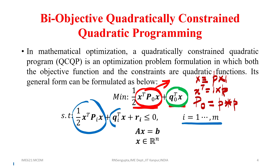The second part of each constraint, highlighted in violet, is the linear component corresponding to x — standard matrix-vector multiplication applies. The last term on the left-hand side of the less-than-or-equal sign is R_i, which would be R1, R2, R3 for M equal to 3, as a constant. The constraint is of the less-than type, which can be converted to greater-than type or equality as needed.